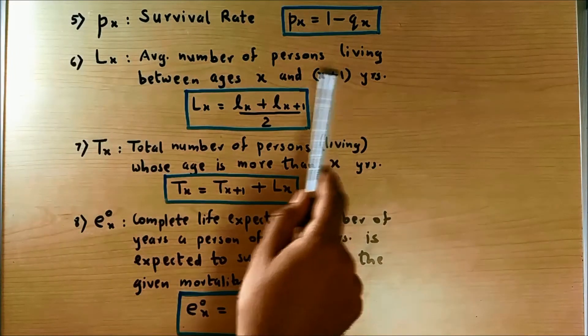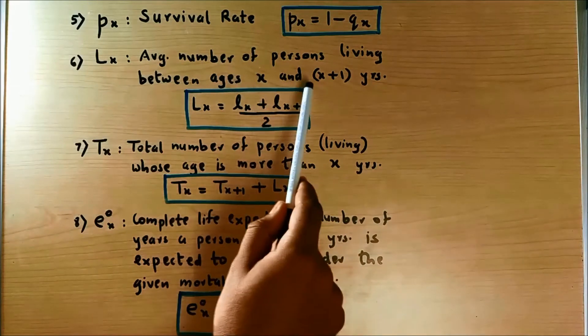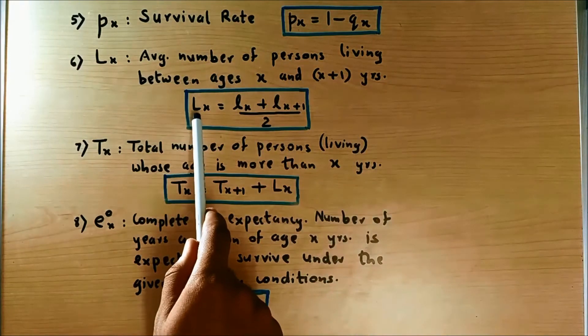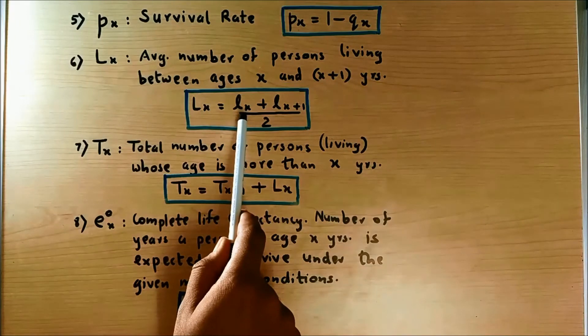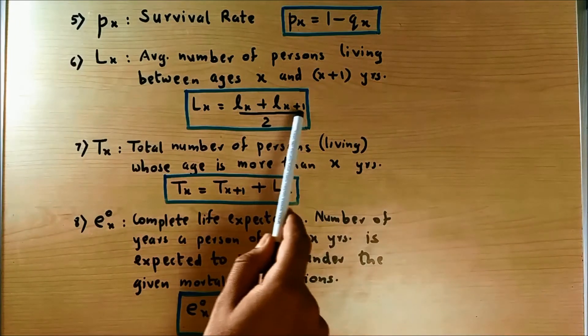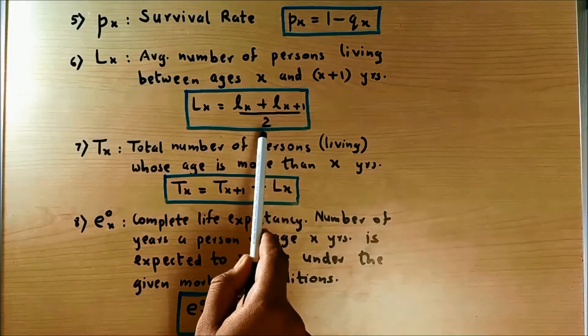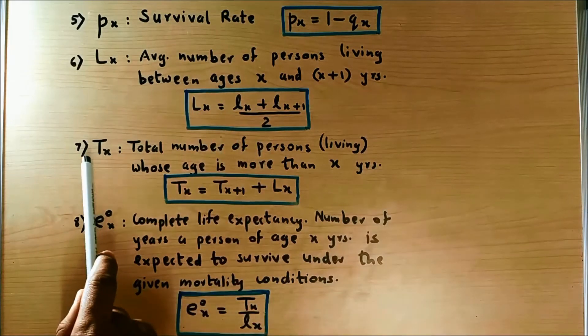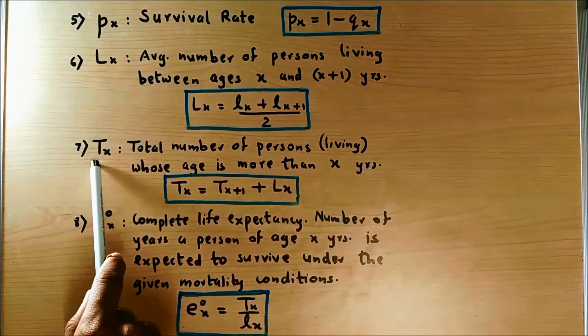It is the average number of persons living between the ages X and X plus 1 years. So capital LX is small LX plus small LX plus 1, or lowercase LX plus 1, divided by 2.